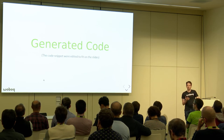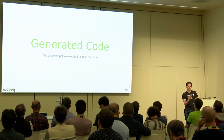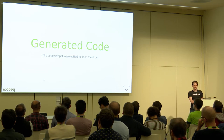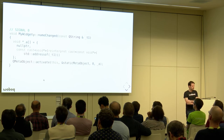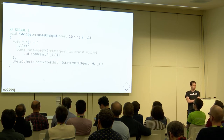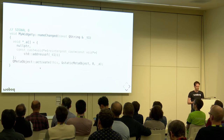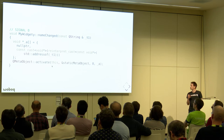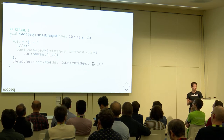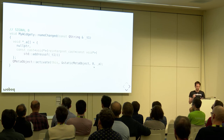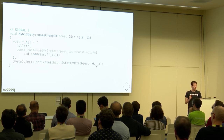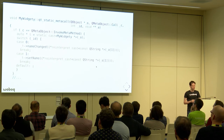Let's look at this generated code, because if we want to replace MOC, this is basically the code we need to generate — not with a code generator, but with templates and meta-programming. The first thing generated are the signals. Signals are just a call to qt_metacall activate, where we tell this function which object we are, which signal — in this case, signal number zero — and an array of pointers to the arguments.